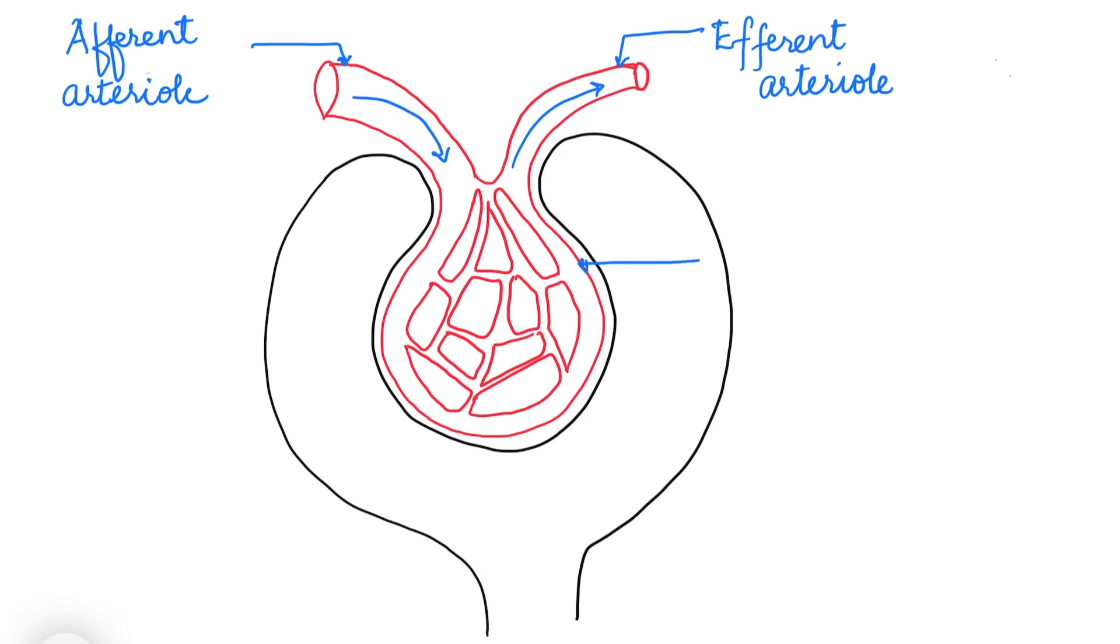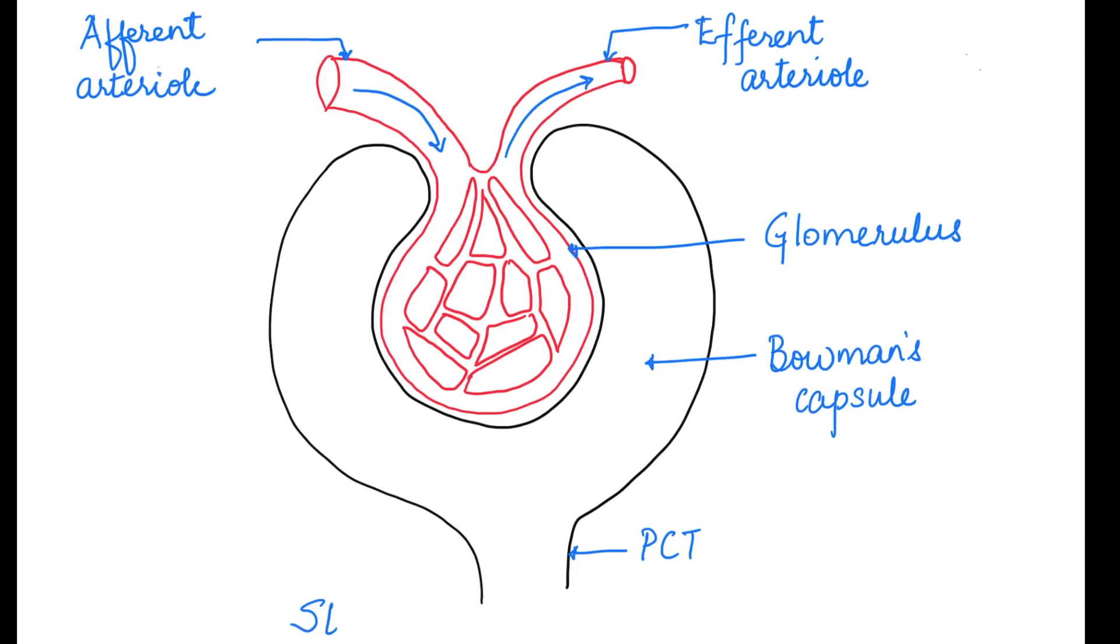The network of capillaries inside the cup-shaped structure is called the glomerulus, and the cup-shaped structure is called the Bowman's capsule. Here we are done drawing and labeling the structure of Malpighian corpuscle, which is also called the renal corpuscle. Lastly, make sure that once you complete drawing the diagram, you need to give a title to the diagram. See you in the next video.